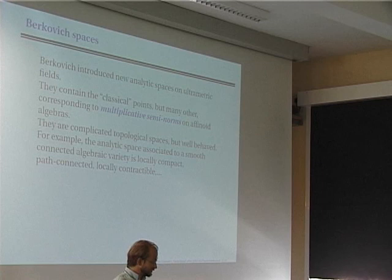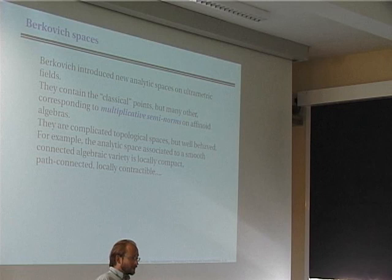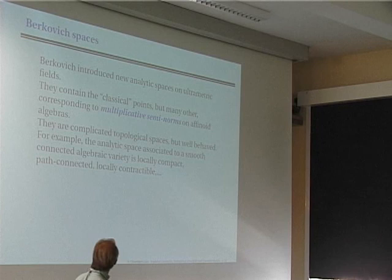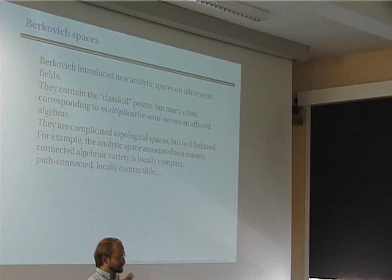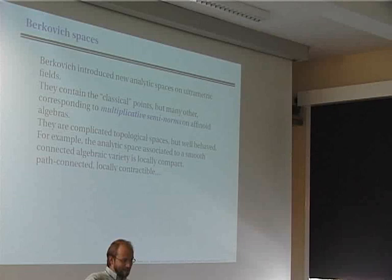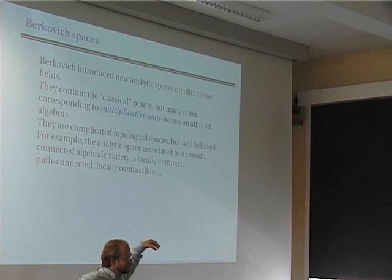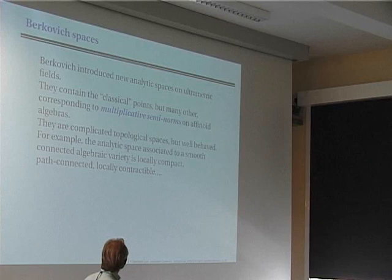These spaces are quite complicated. For example, if you look at curves, you get something like a graph — it looks like a graph in some rough sense, but it is very hairy: a graph with lengths on the edges, and at any rational point on an edge you have a new graph leaving, and on any rational point on that graph you have branches spreading out. The topology is good enough so that you can do topology and analysis. For example, if you take a smooth connected algebraic variety, what you get is locally compact, path connected, and even locally contractible by a deep theorem of Berkovich himself.